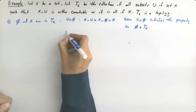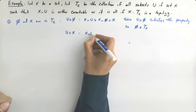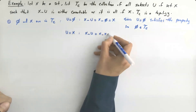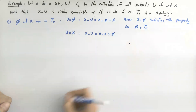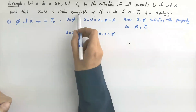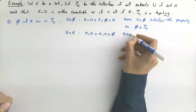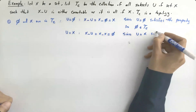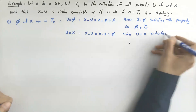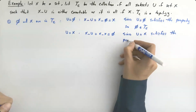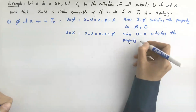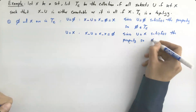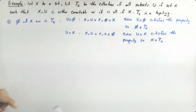Now let U be X. Then X minus U is X minus X, which is the empty set. As we know, the empty set is countable. Since U equals X satisfies the property, X is also in τ_C.